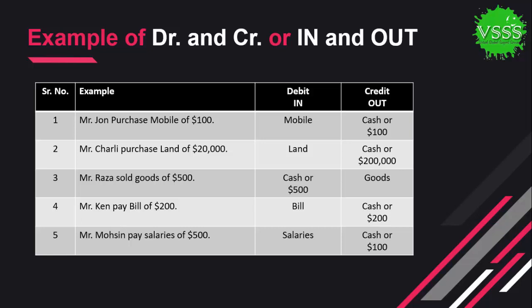In the last example, Mr. Mosin pays salaries of $500. The $500 is going from us, so it will be credited, and salaries expense increases, so it will be debited. From these examples we can easily identify and differentiate between debit and credit.